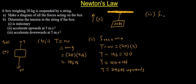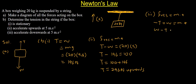We still have our resultant force: resultant force equals mass multiplied by acceleration. We said moving up is positive and moving down is negative. So if the box is moving down, our tension becomes negative and weight becomes positive, because the box is moving in the direction of weight. This is the same as: weight minus tension equals mass multiplied by acceleration, which is 20 multiplied by 5.